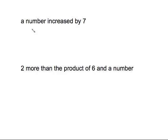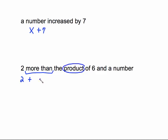'A number increased by seven' — a number is x, 'increased by' is a plus sign, seven. That's all there is to it. 'Two more than the product of six and a number' — starting from the left, 'two more than' gives us our addition sign, 'product' means we multiply, so we put a dot. We're multiplying six and some number x, but we clean it up by removing the dot, writing two plus six x.